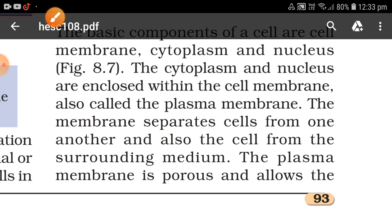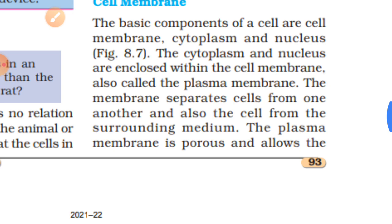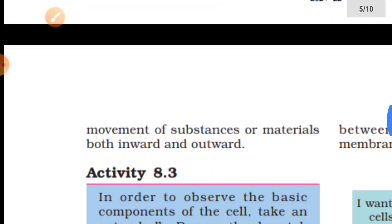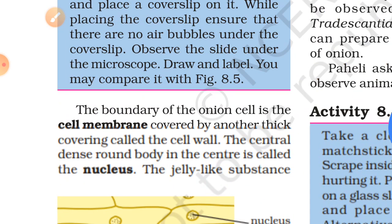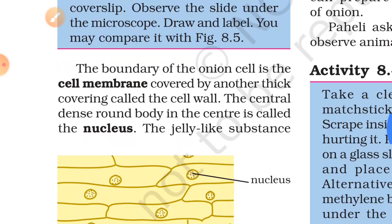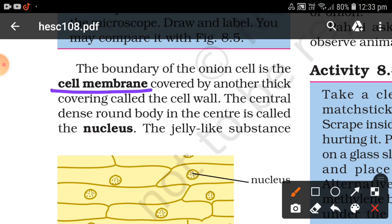The plasma membrane is porous and allows movement of substances and materials both inward and outward. The boundary of an onion cell is the cell membrane — we call the boundary of the onion cell the cell membrane.